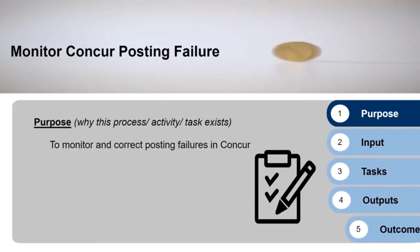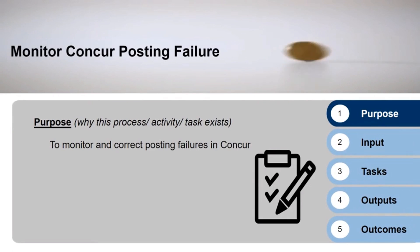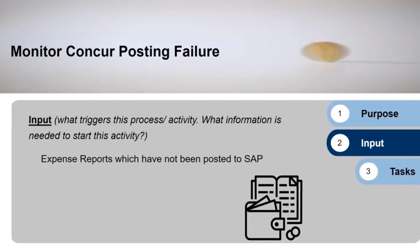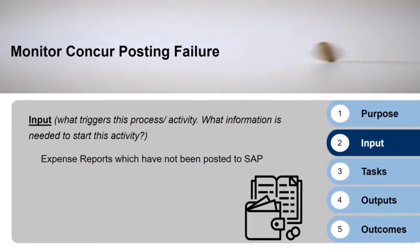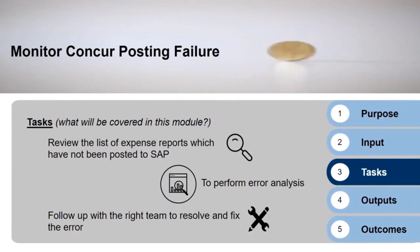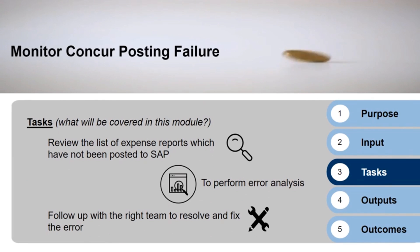The purpose of this module is to monitor and correct the posting errors in Concur. The inputs of this process are the expense reports which have not been posted to SAP. By the end of this module, you will be able to review the list of expense reports which have not been posted to SAP. You will be able to perform error analysis and will be able to follow up with the right team to resolve and fix the error.